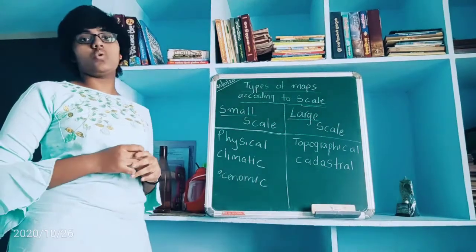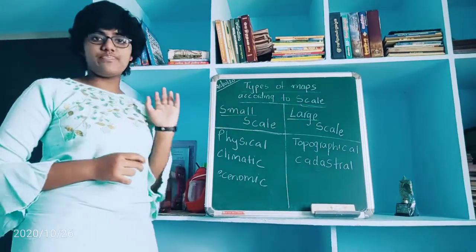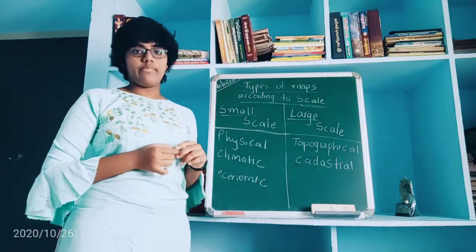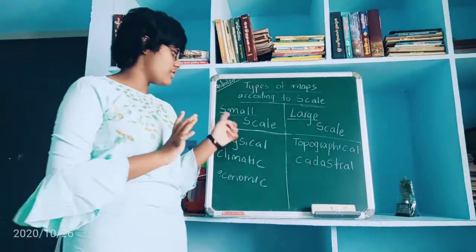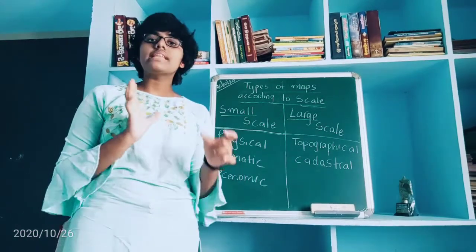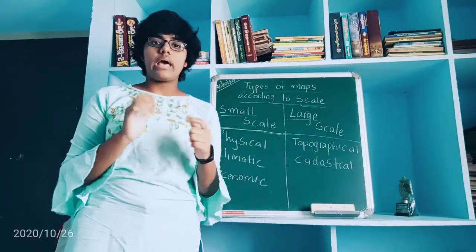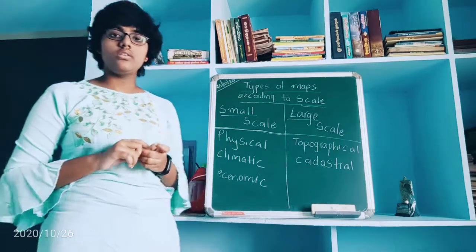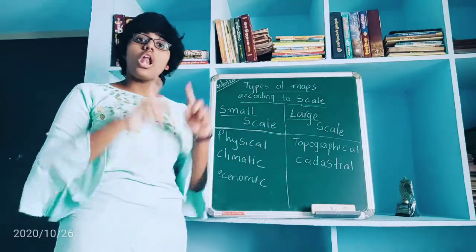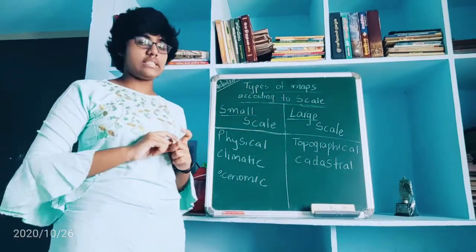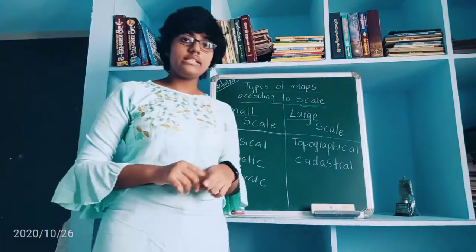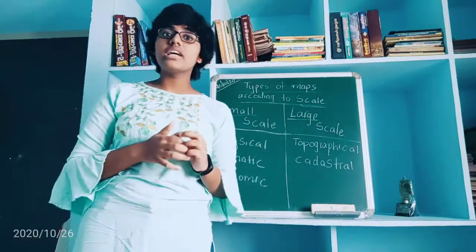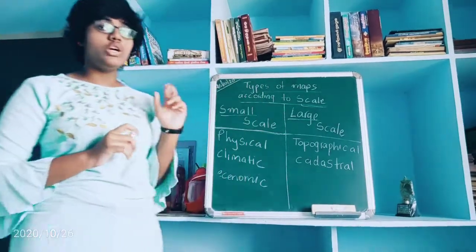So first we are going to learn about small scale maps. Small scale maps are maps which show a larger area with less details. And large scale maps show a very small area with many details.